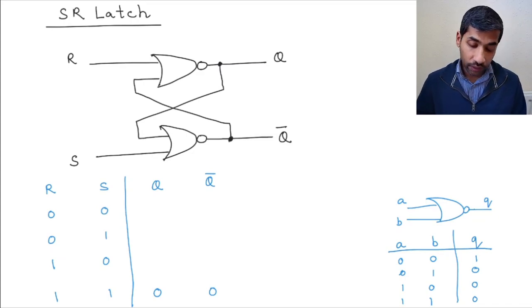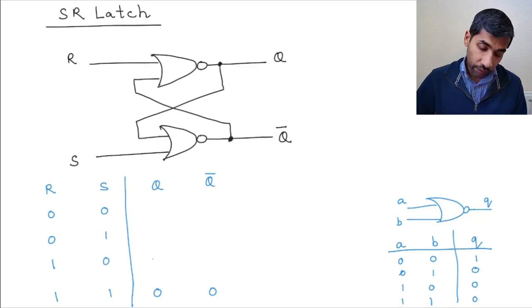What happens when R is 1 and S is equal to 0? So if R is 1, then the output of this NOR gate is 0, that is Q is 0. And if Q is 0, then we already know that S is 0. And if Q is 0, then this input is also 0, so we got both 0s here. And therefore, Q bar is equal to 1. So the output here is going to be 0 and 1.